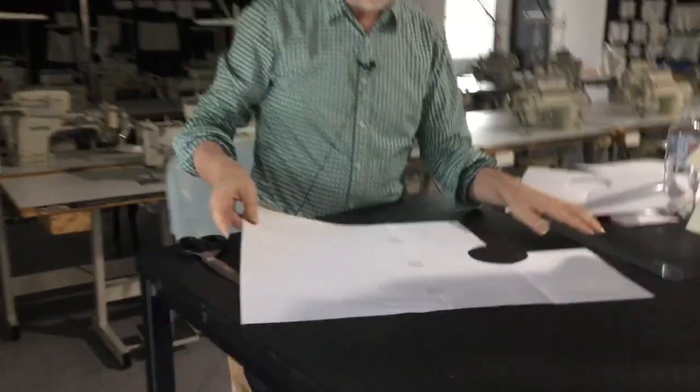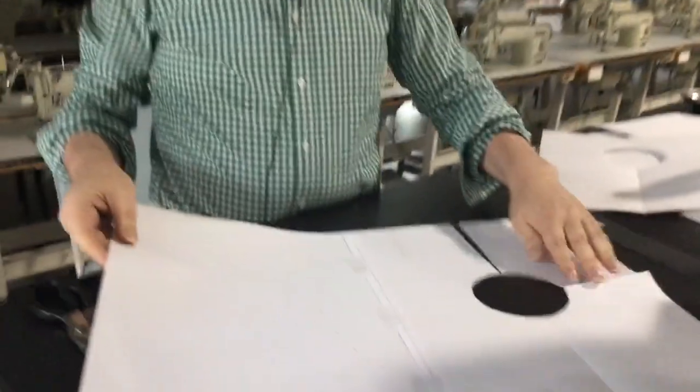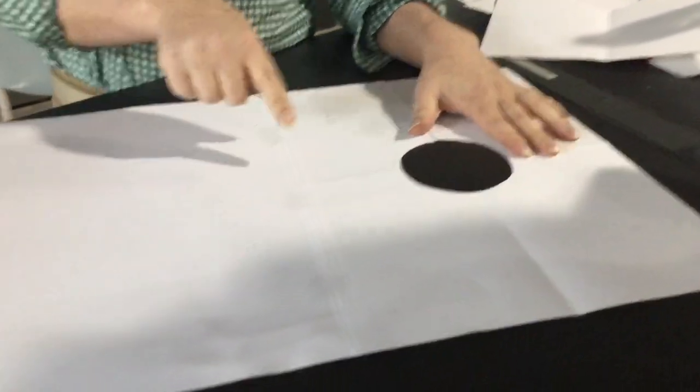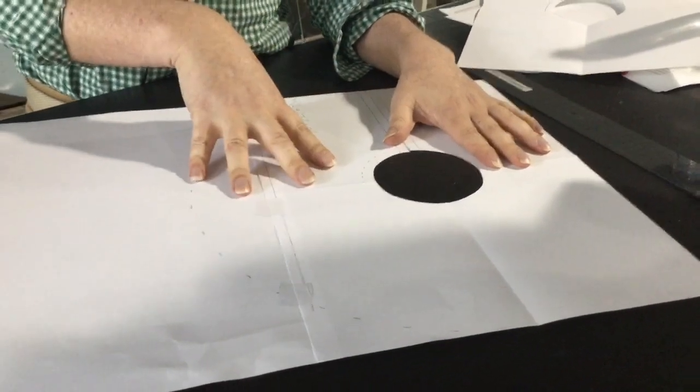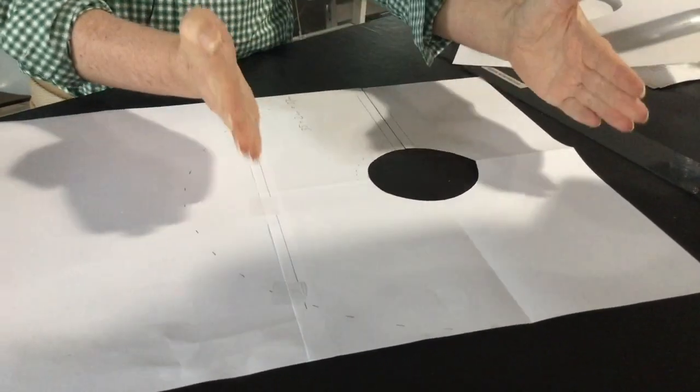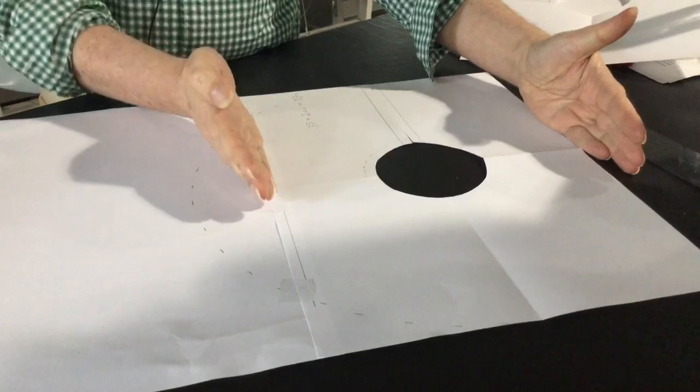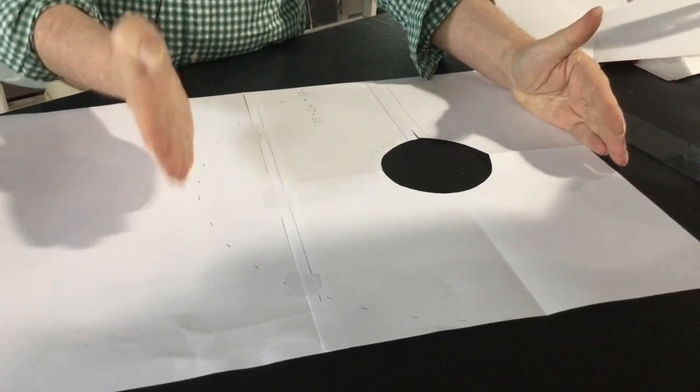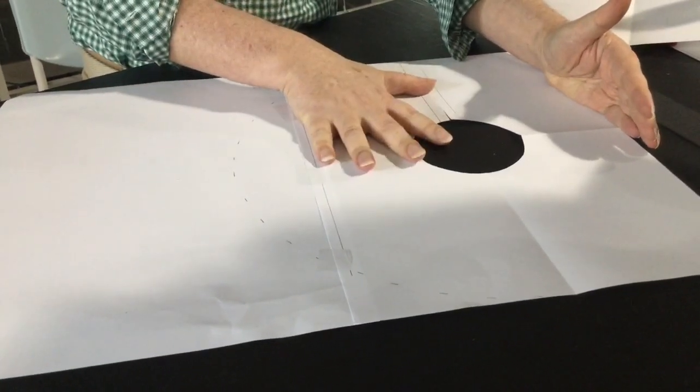So what happens if you're doing a full circle skirt and even at this size you can see that our paper is only this wide, so not all of the pattern shape fits on one piece of paper.